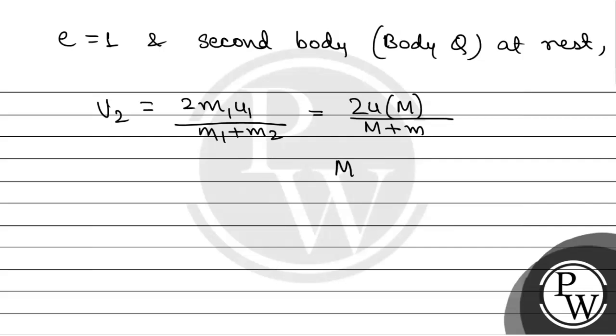Now, it has been given that M is much, much larger than small m. So this denominator will be equal to M. So this will be equal to 2U. So V2 will be equal to 2U.